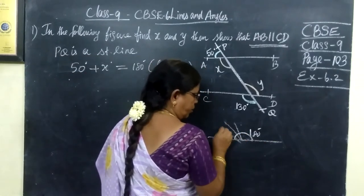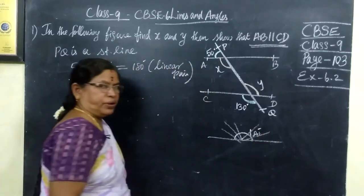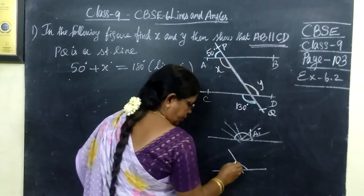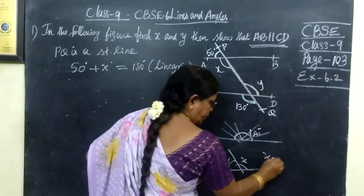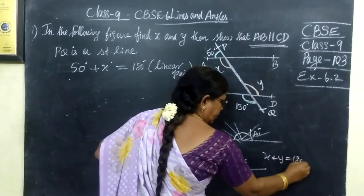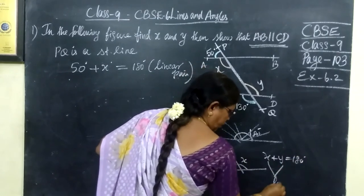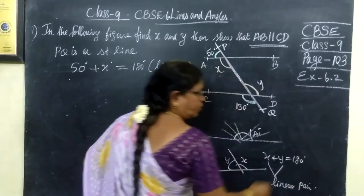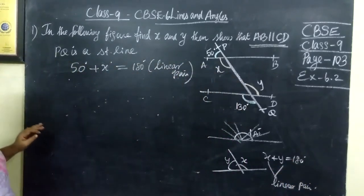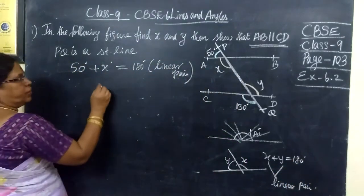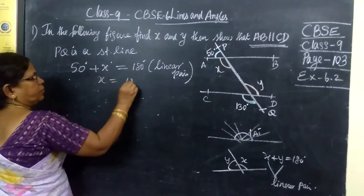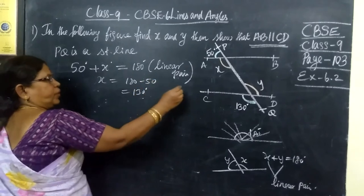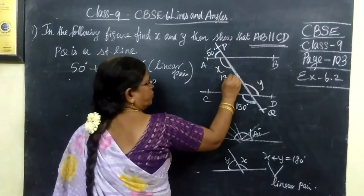Sum of all the adjacent angles is equal to 180 degree. So if you consider only two angles, if you add it, if it is equal to 180 degree, then X and Y are called linear pair. So linear pair means sum of the angle is equal to 180 degree. So 50 plus X is equal to 180 degree, so we have found X is 130.